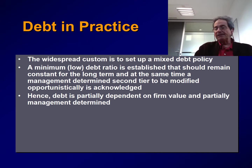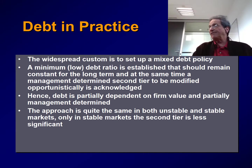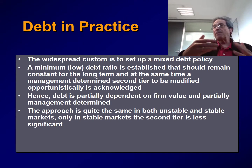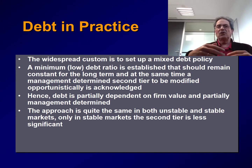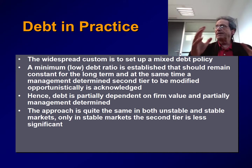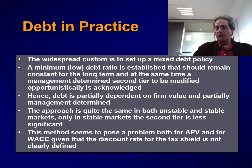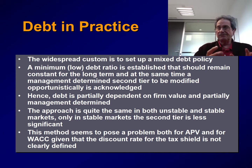In consequence, the debt is partially dependent on the value of the firm — because we have this minimum debt ratio that is a function of the value of the firm — and partially determined by management. This approach is quite the same in both unstable and stable markets. In stable markets, the second tier is less significant. In a very stable market like Switzerland, surprises by government are very infrequent, so most of the debt is determined by the value of the firm and you have a more or less stable debt ratio over time — which is what is assumed in most corporate finance textbooks focused on big, stable companies in stable markets. But if we look at the way debt is really established in practice in most companies all over the world, we have a problem both for APV and for WAC, given that the discount rate for the tax shield is not clearly defined.